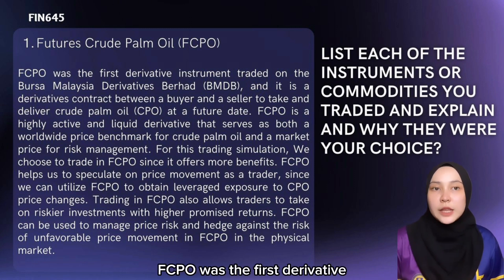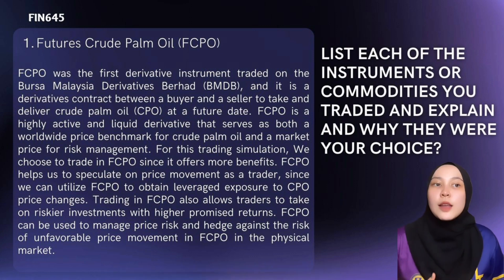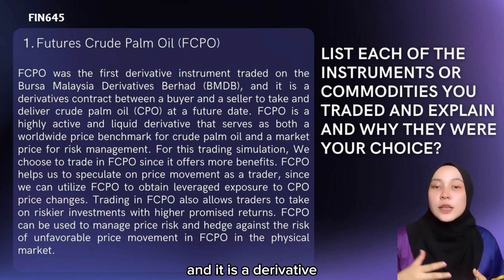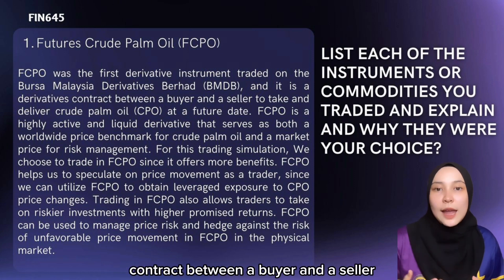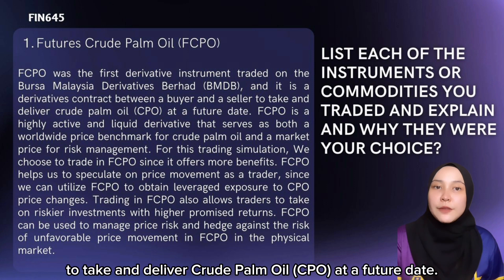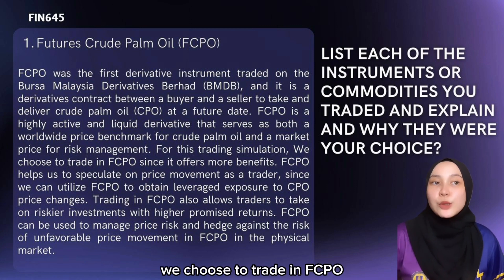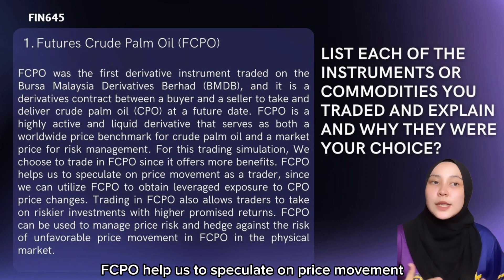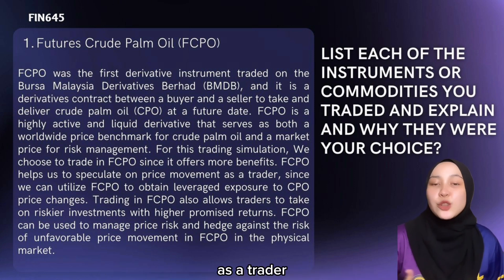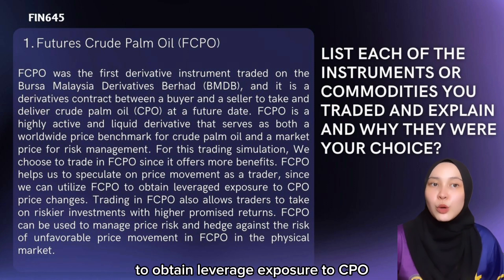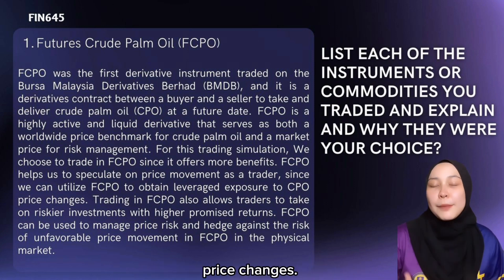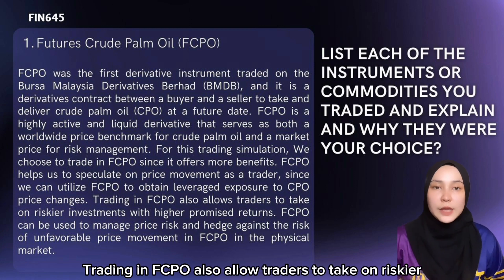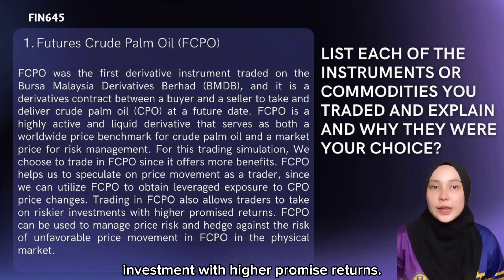FCPO was the first derivative instrument traded on the Bursa Malaysia Derivative Berhad (BMDB), and it is a derivative contract between a buyer and a seller to take and deliver Crude Palm Oil (CPO) at a future date. For this trading simulation, we chose to trade in FCPO since it offers more benefits. FCPO helps us speculate on price movement as a trader, since we can utilize FCPO to obtain leveraged exposure to CPO price changes.